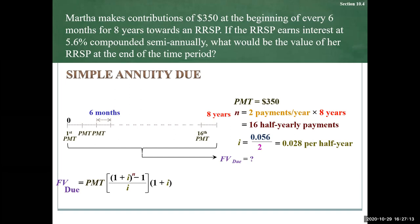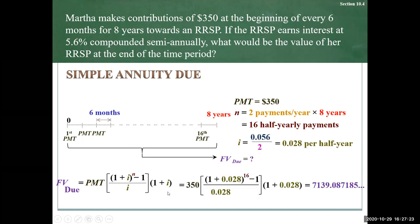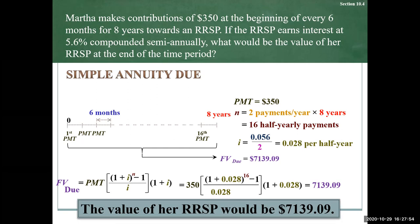Plugging everything into the formula — be careful not to forget the last term (1 + i) in the future value due formula. There's the payment of $350, the periodic rate of 0.028 per semi-annual, and the 16 semi-annual periods. The number of periods and the periodic rate must have the same units. Calculating and rounding, at the end of her eight years Martha will have $7,139.09 in her RRSP.